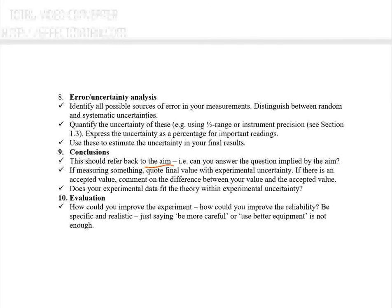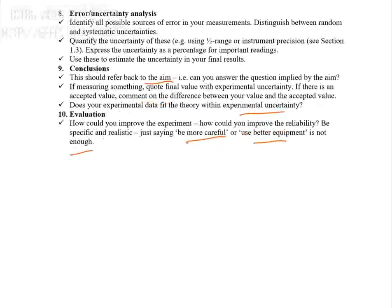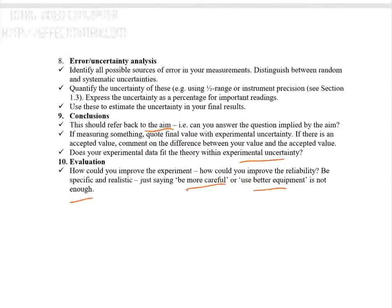If there is an accepted value, comment on the difference between your experimental value and the accepted value. Discuss whether your data fits the theory within experimental uncertainty. Finally, evaluate how you could improve the experiment — be specific and realistic. Simply saying 'be more careful' or 'use better equipment' is not enough. This completes Unit 1. Until next time, have a nice time.